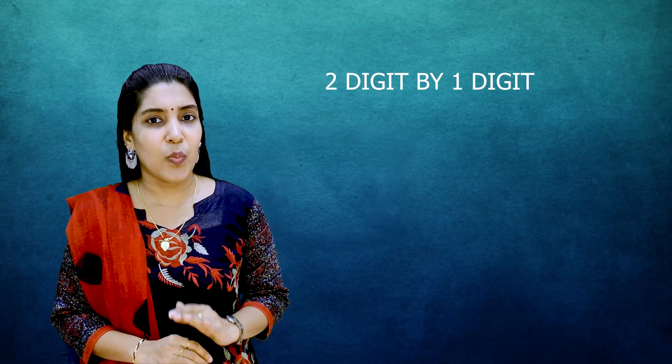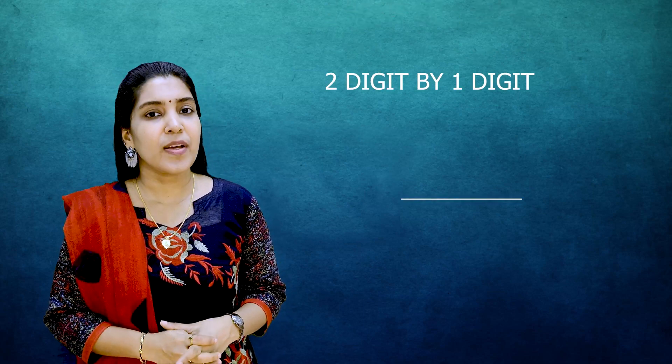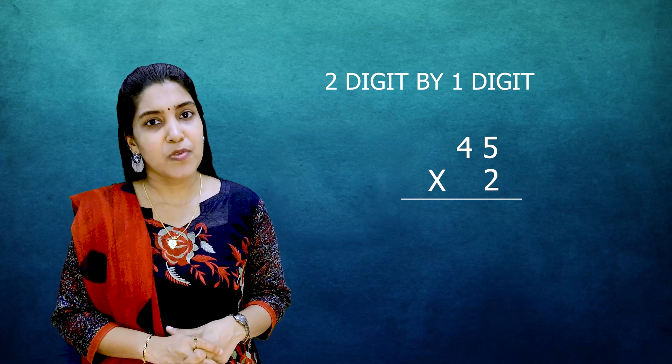Let's start. How to do multiplication? 2 digit by 1 digit first. Let's take one number: 45 times 2.